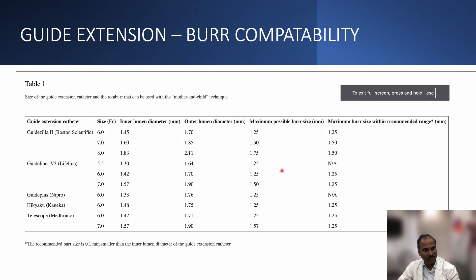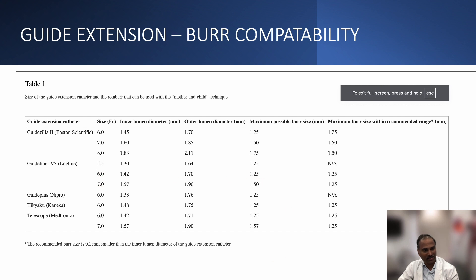Regarding compatibility of guide extension with burr: Guidezilla gives maximum space, so always use a burr at least 0.1 mm smaller than the inner lumen of the guide extension catheter. Guidezilla provides maximum lumen area: 6 French accepts 1.25 mm burr, 7 French accepts 1.5 mm, and 8 French can accept 1.75 mm though with some resistance — 1.5 mm is easy. Guide Plus in the second case takes only 1.25 mm and won't accept 1.5 mm; Guideliner can send 1.5 mm in 7 French, and 6 French easily takes 1.25 mm burr.